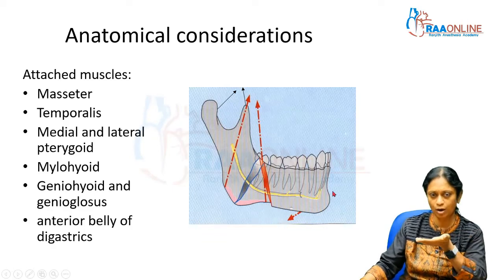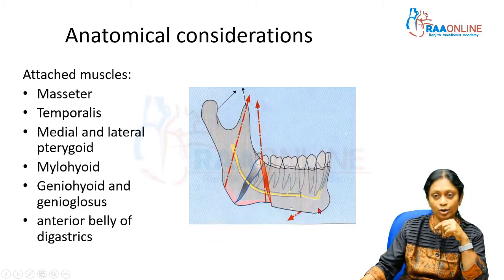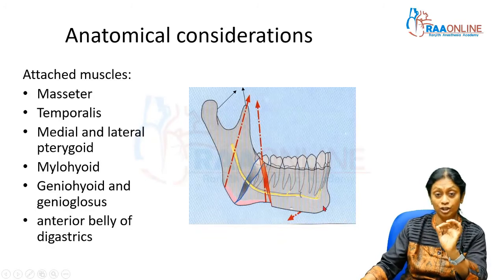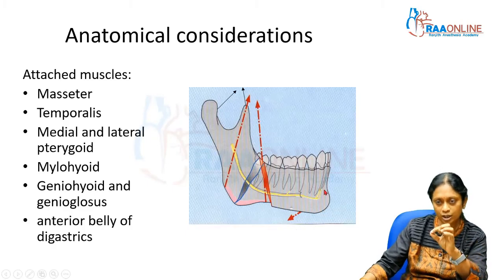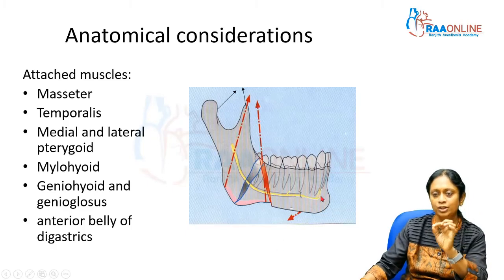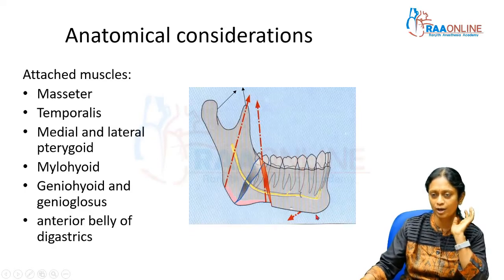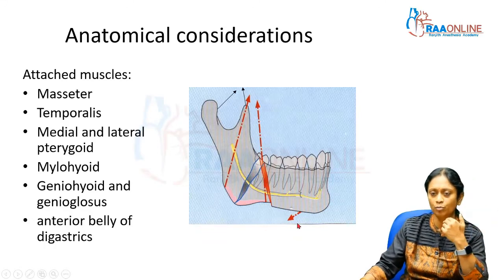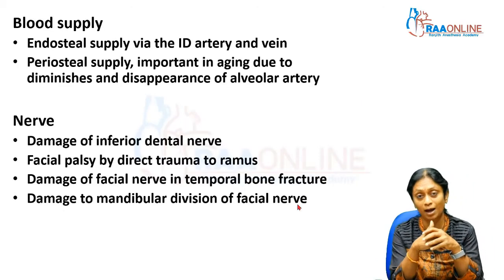Then you have the mylohyoid muscle, which is actually the floor of the mouth, the geniohyoid, and the genioglossus. Remember the genial tubercles on the anterior part of the mandible on the medial aspect — from there you have the geniohyoid going from the genial tubercle to the hyoid bone, and the genioglossus going from the genial tubercle to the tongue. You also have the anterior belly and posterior belly of the digastric.